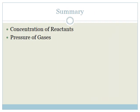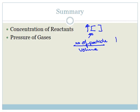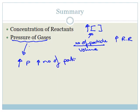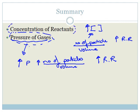To summarize, grade 12s — concentration of reactants and pressure of gases work exactly the same way. If we increase the concentration, which is the number of particles per unit volume, we increase the rate of reaction. Similarly, if we increase the pressure, we are really increasing the number of particles per unit volume, which means we are increasing the reaction rate. Pressure of gases works exactly the same as increasing the concentration of aqueous solutions.